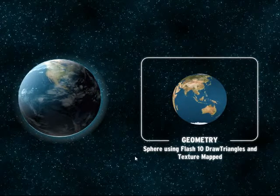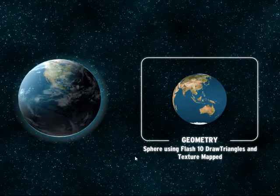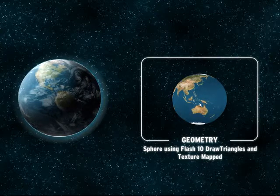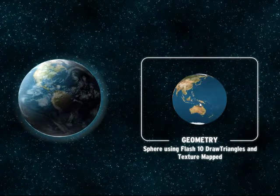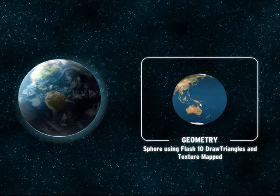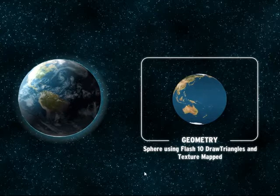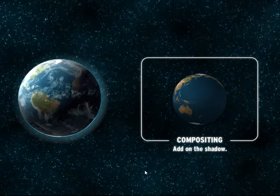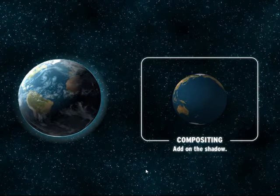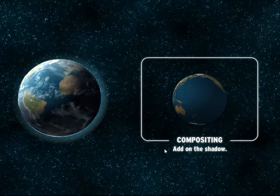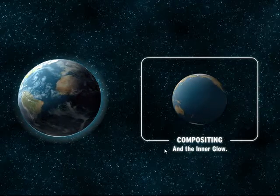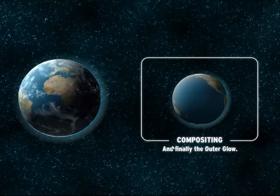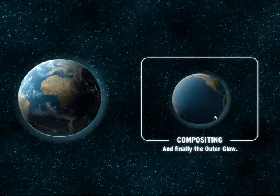The geometry is a sphere using Flash 10 draw triangles, basically texture-mapping that sphere. We create the sphere, pop it into vectors, pass it into draw triangles, then do a compositing pass where we add the shadow on top of the sphere, then the inner glow, and finally the outer glow.